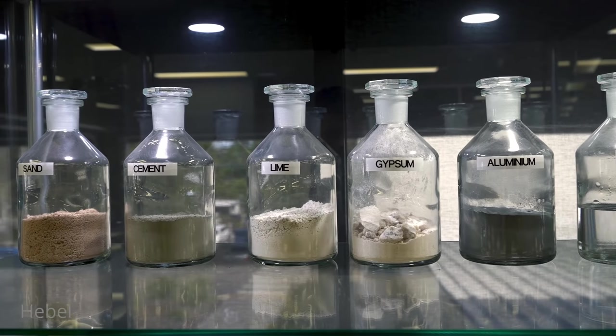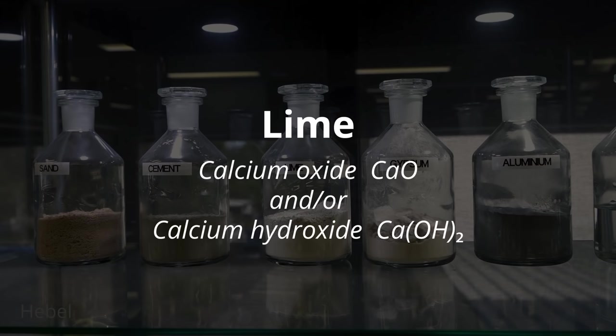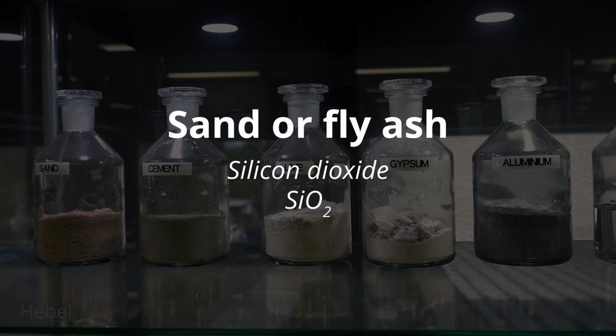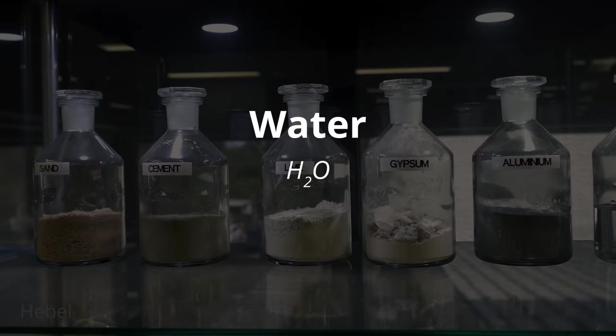Its main ingredients are cement, which is a mixture of silicates and oxides; lime, which is calcium oxide and/or calcium hydroxide; gypsum anhydrite, which is anhydrous calcium sulfate; finely ground sand or silicon dioxide or fly ash; aluminum powder; and water.